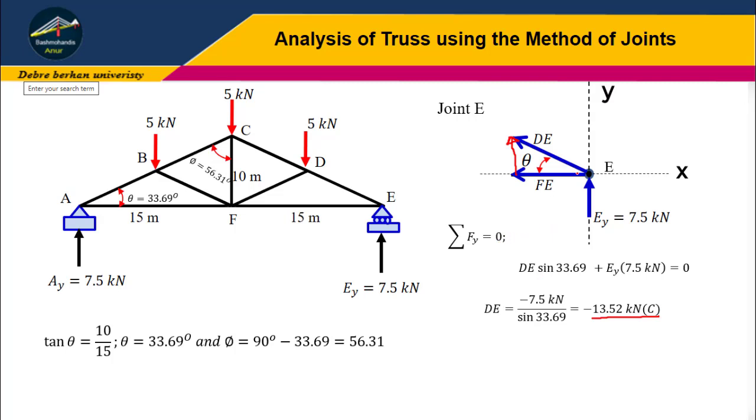Before adding forces in the x direction, I have to change this arrow since the force is compression. Now, summation of forces in the x direction must be zero. Therefore, minus DE cosine 33.69 minus EF equals zero. Rearranging, EF equals 12.5 kilonewtons tension.